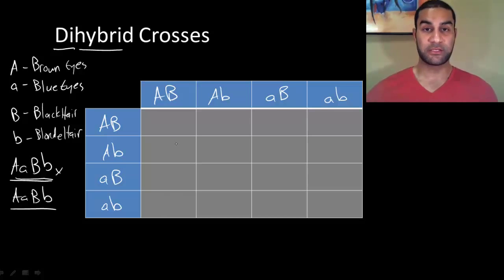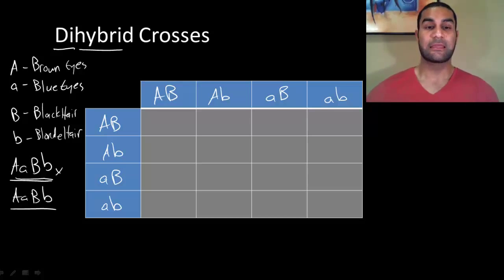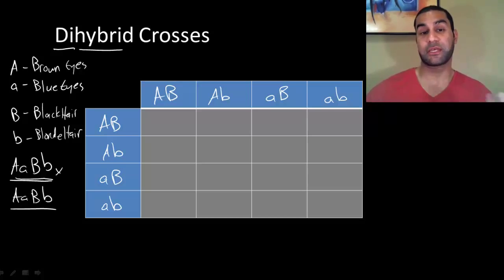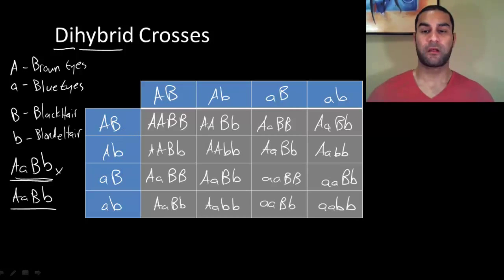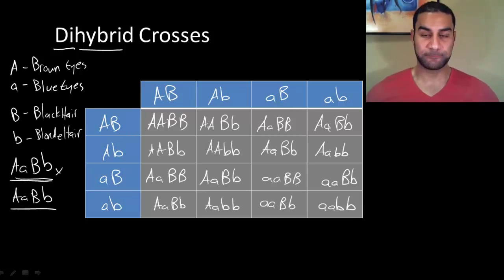When you combine the gametes, follow the basic rules: keep your A's together and your B's together, and if you have any heterozygotes, always put the capital letter before the lowercase. The first combination would be two capital A's and two capital B's — this individual is homozygous dominant for both. This is what you should end up with after completing the full 16-box Punnett square.